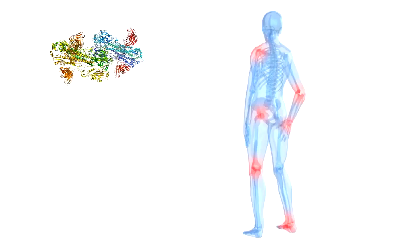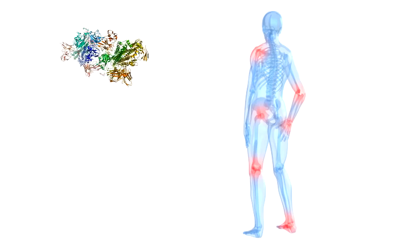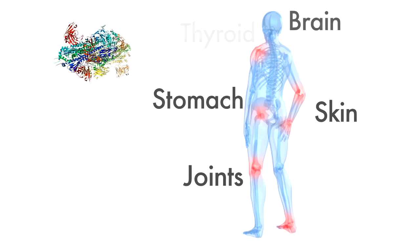The lectins he observed were causing inflammation both systematically and in targeted areas of the body like the joints, skin, stomach, brain, and thyroid.